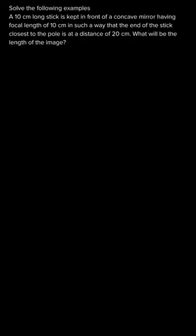Hello everyone. In this question we have a stick that is 10 cm long, which is kept in front of a concave mirror whose focal length is 10 cm, in such a way that the end of the stick closest to the pole is at a distance of 20 cm — i.e., the distance of the first end of the stick is 20 cm from the concave mirror. We need to find the length of the image.